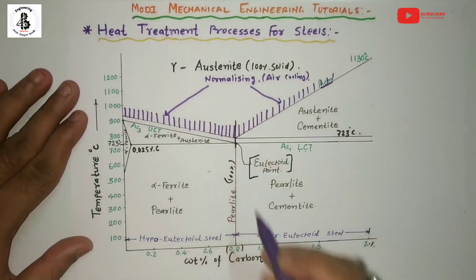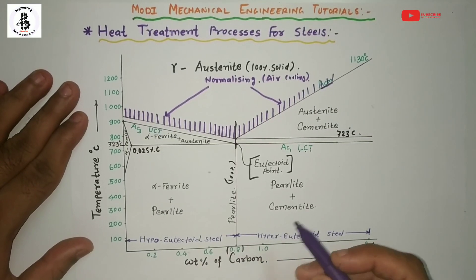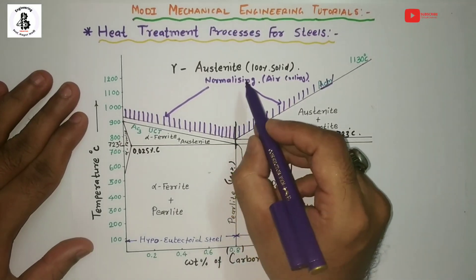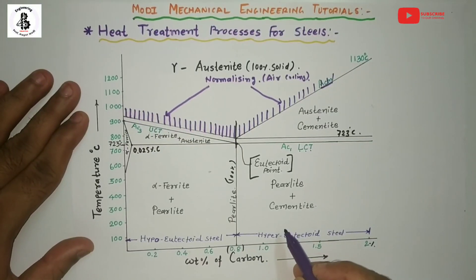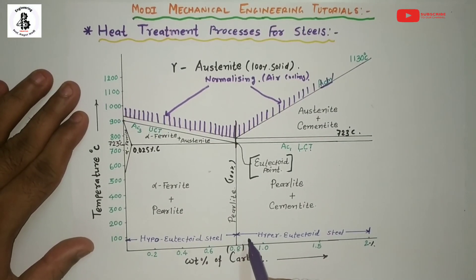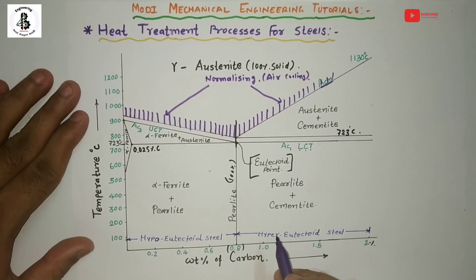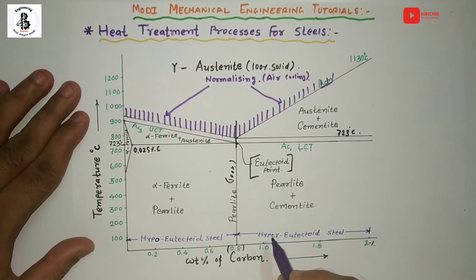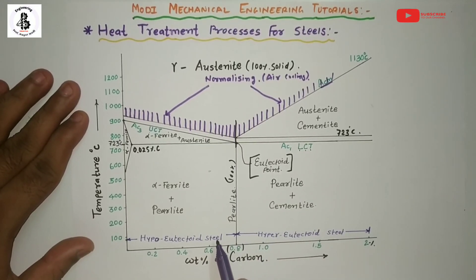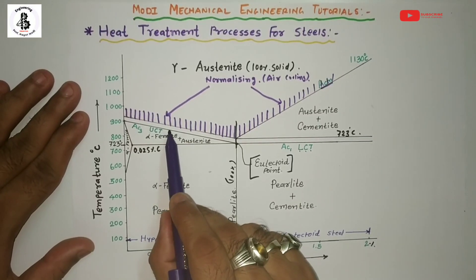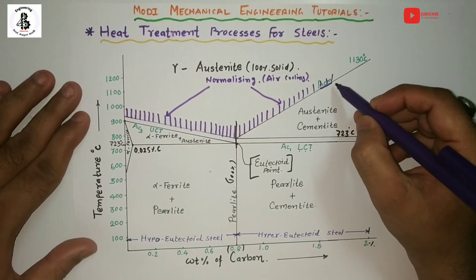In the normalizing process, the temperature involved is more than that of the annealing process. As a result, the homogeneity of the austenite increases, leading to better dispersion of ferrite and cementite in the final structure, giving better mechanical properties. The normalizing temperature varies depending on carbon content: for hypo-eutectoid steels it is AC3 + 50°C, and for hyper-eutectoid steels it is measured from the ACM temperature.